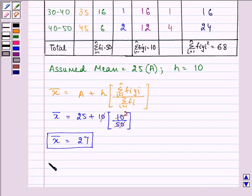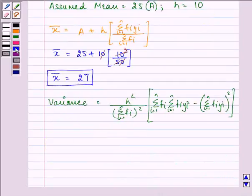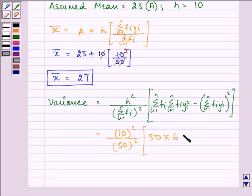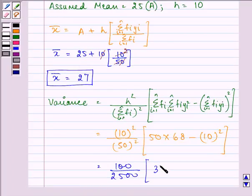Now we know the formula for variance. It is h square upon summation fi the whole square. Now substituting the values, we have h as 10 the whole square, it will be 50 the whole square, into summation fi is 50, times fi*yi square is 68 minus summation fi*yi the whole square, 10 the whole square.